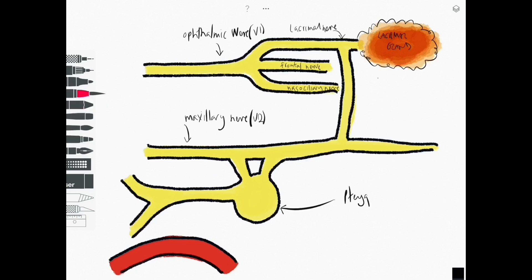We also need to draw on the internal carotid artery, I'll come on to that in a moment but central to our story here is the pterygopalatine ganglion. This is important for the parasympathetic supply to the lacrimal gland.